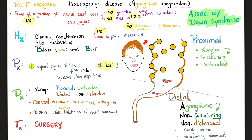Hirschsprung disease is relatively common in children with Down syndrome. On physical exam there is the classic squirt sign: the doctor inserts a gloved finger into the anal canal, and there is a sudden squirting of feces and loud flatus. To diagnose it: do an abdominal X-ray showing proximally distended colon and no distension distally. A contrast enema will show the transition zone, usually at the recto-sigmoid junction. Biopsy confirms the proximal part has ganglia and is distended, while the distal part lacks ganglia and the enteric nervous system — no myenteric, no submucosal plexus.